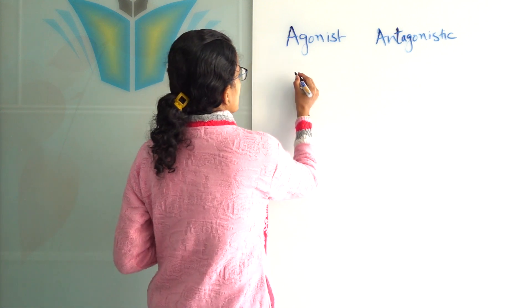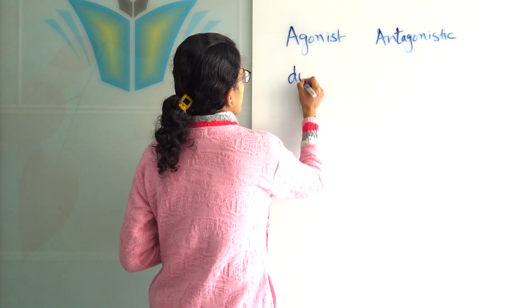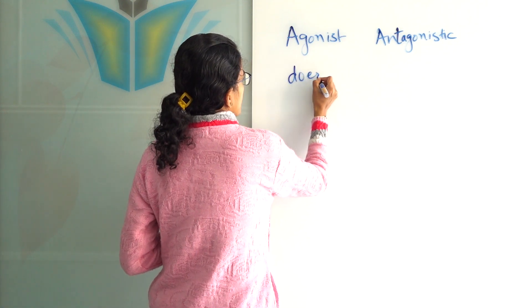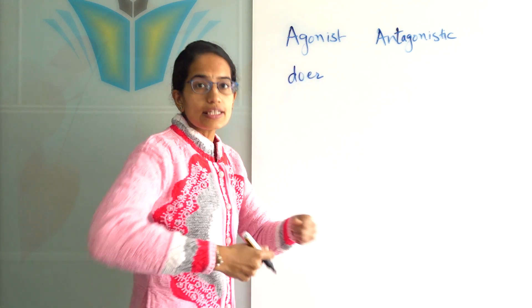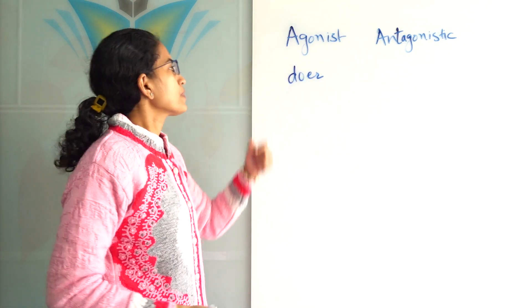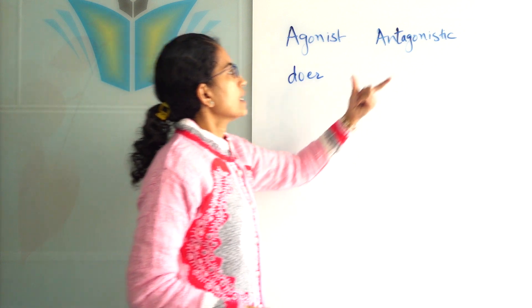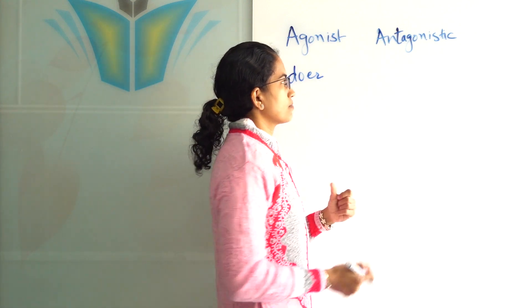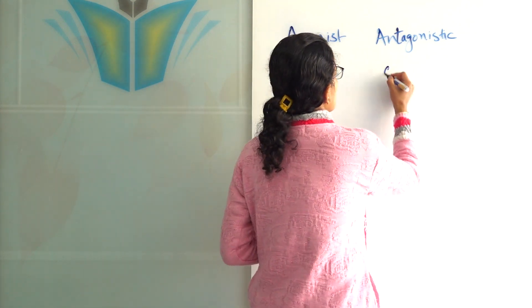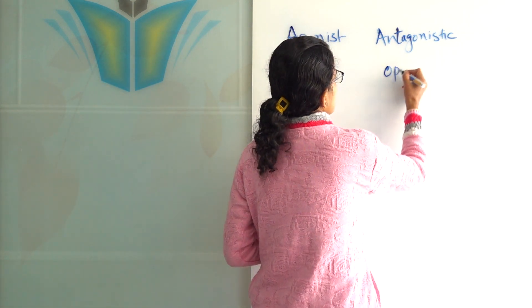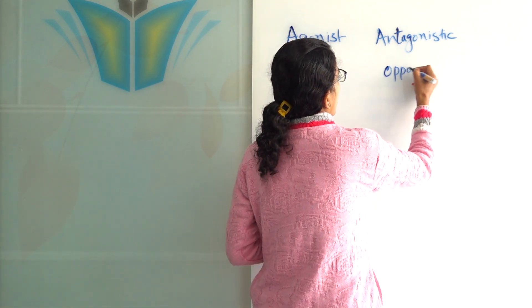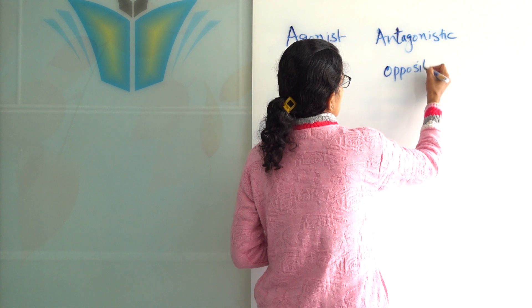The agonist muscle is the doer muscle that does the action. However, the antagonistic muscle is a muscle that does the opposite action.